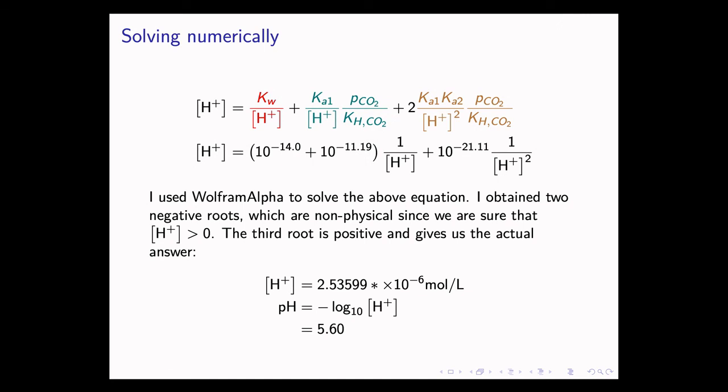But I'm not in the business of solving this by hand. I used Wolfram Alpha. You can use any equation solver that you like. And I obtained two negative roots. Now, these are non-physical because we know for sure that the molar concentration of H+ will be greater than zero. You can't have negative moles of H+ ions. However, the third root is positive and it gives us the actual answer. And the answer is 2.53 times 10 to the negative 6 moles per liter. Now, using the equation that pH is equal to the negative log base 10 of the H+ concentration, we find that the pH is 5.60.